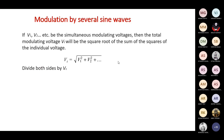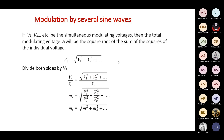Now let us calculate the corresponding modulation index. This Vt represents the total modulating voltage. When we want to calculate the modulation index, we divide by Vc. Vm by Vc gives the modulation index. So dividing by Vc on both sides, Vc is taken inside the root. The total modulation index will be: Mt = √(M1² + M2² + ...), where each term is the individual modulation index for the individual sine waves.